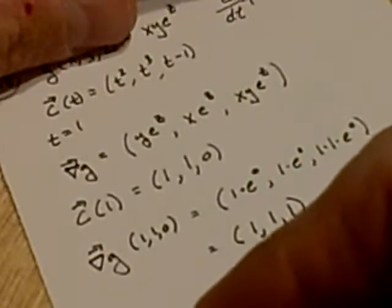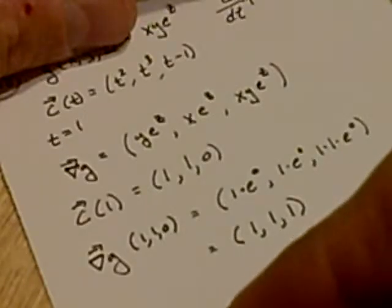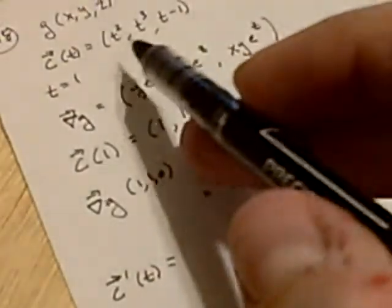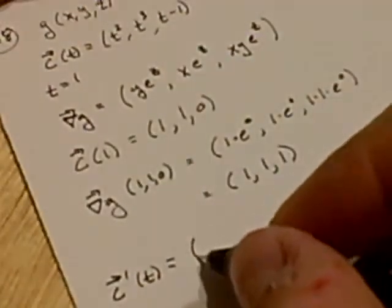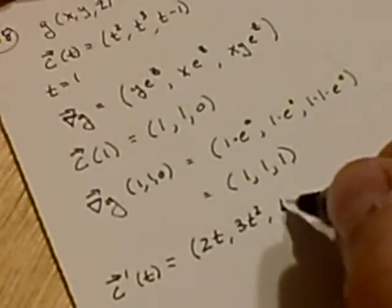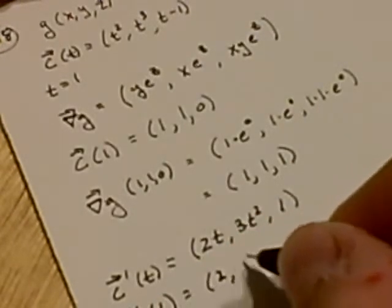Now let's calculate the tangent vector at that point. First, there's a function, right? The derivative of the tangent vector is 2t, 3t squared, 1. And so the tangent vector at t equals 1 is 2, 3, and 1.